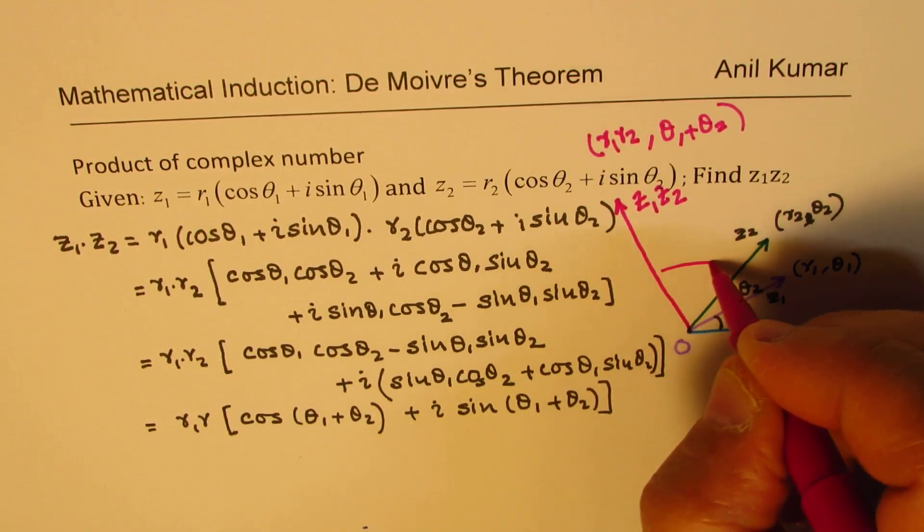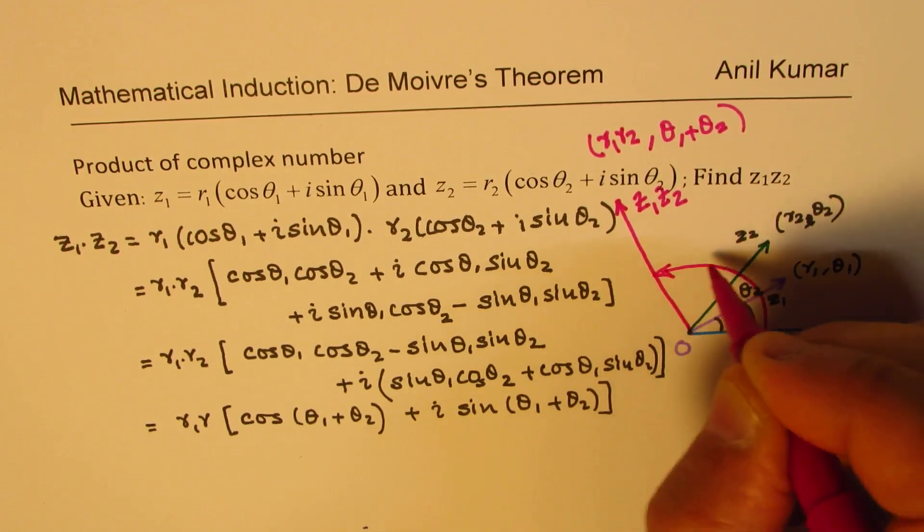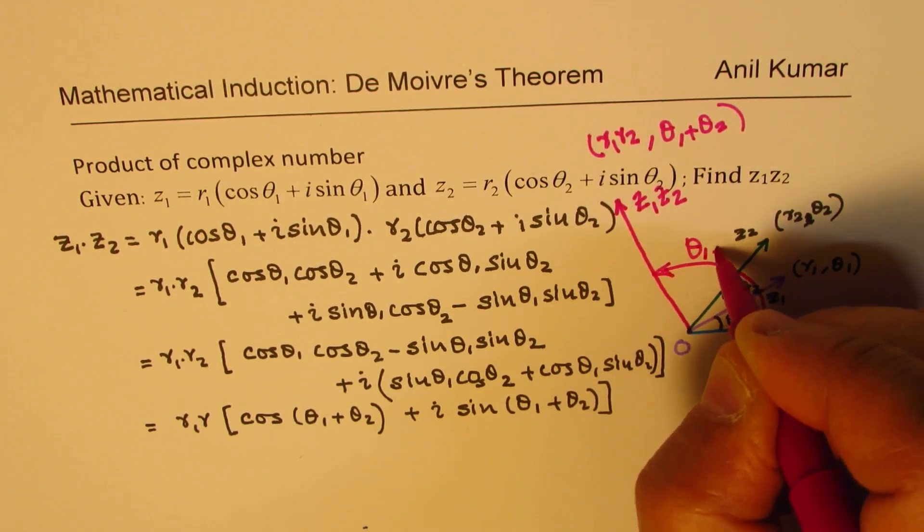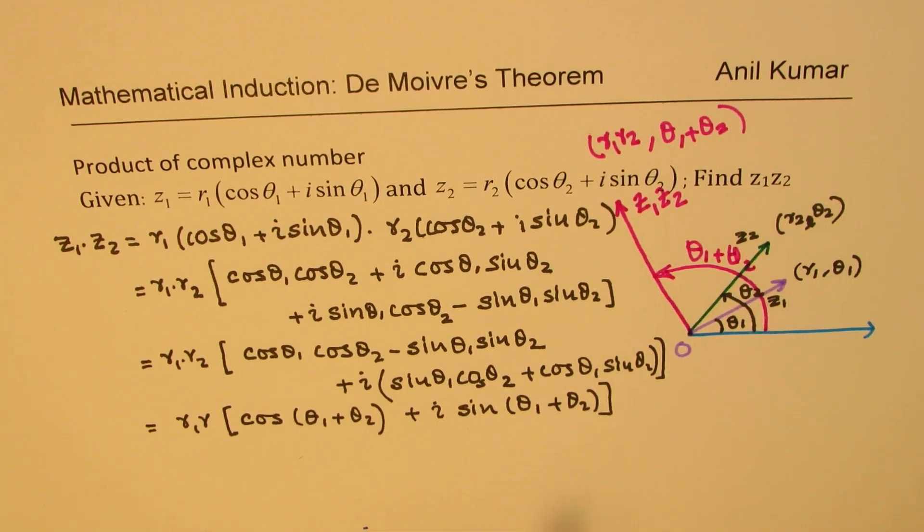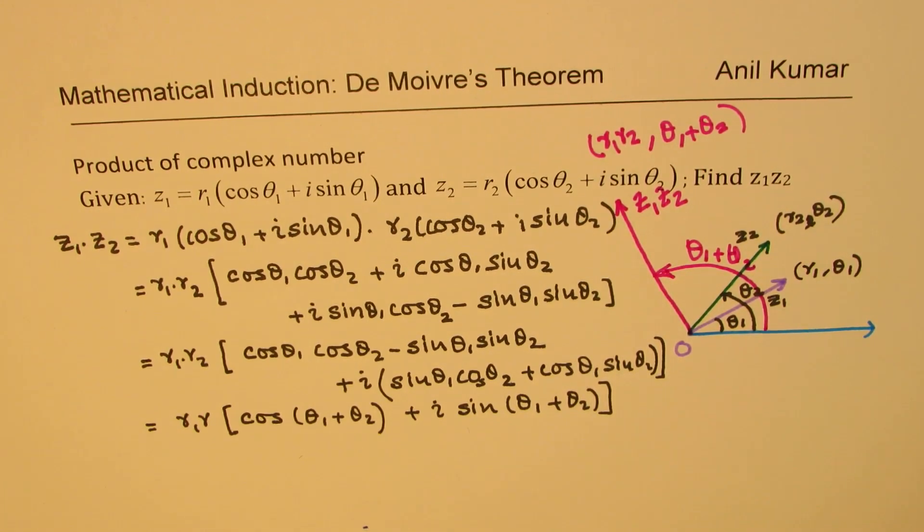So now this is the product of these two. That angle here is theta1 plus theta2, as shown here. So this is a very important formula.